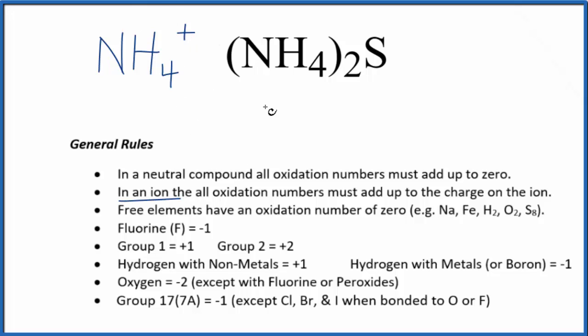So if we have an ion like the ammonium ion here, all the oxidation numbers add up to the charge on the ion. So we don't know what the nitrogen is. We're going to call that X.